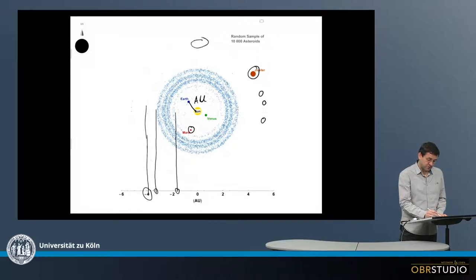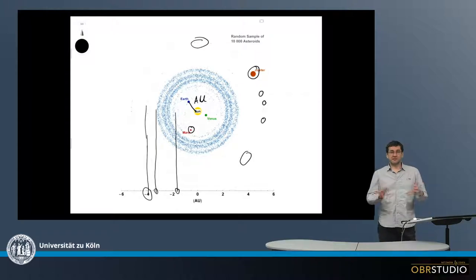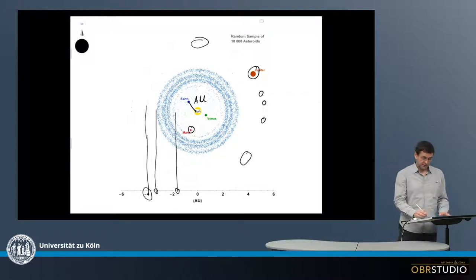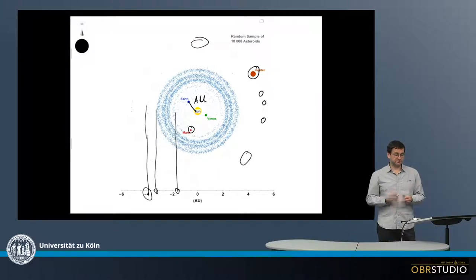And of course, then there are the Trojans, which are in the Lagrange points, following Jupiter in its orbit around the Sun, and also being a little bit ahead of Jupiter around the Sun.